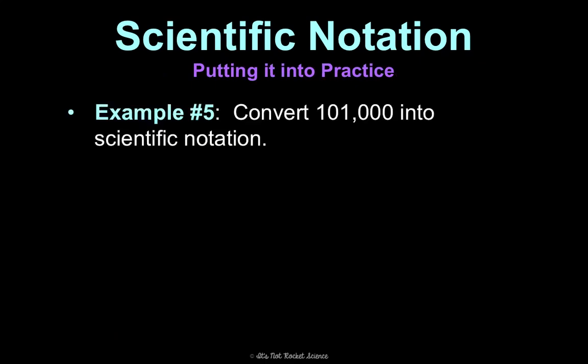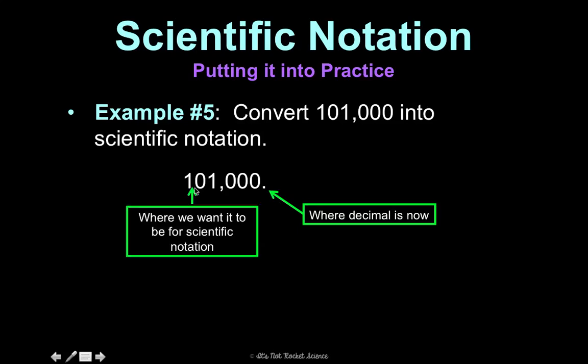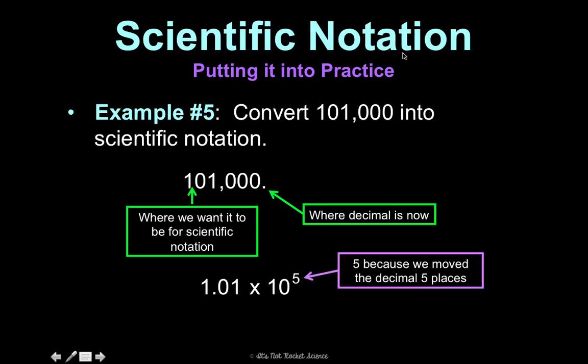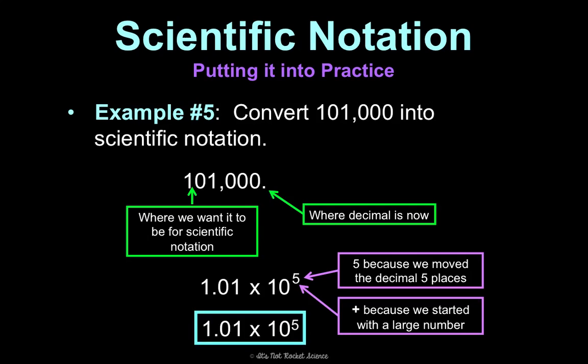Let's put it into practice. Convert 101,000 into scientific notation. So, this is where my decimal is. When it's not written in, it's right here. But I want it to be right here. Count how many times you're going to have to move it to get it there. To get it there, I'm going to have to move it five times: 1, 2, 3, 4, 5. That's how many times I moved it. Now, this is positive because it was a large number to start with. So that is your final answer. 1.01 times 10 to the 5th.